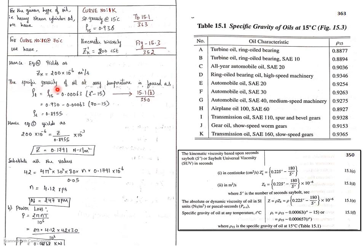The specific gravity of oil at any temperature is found as rho T. This is very important because in the equation we substitute rho T. We know rho 15 — this formula from page 350. Substitute with temperature given as 70 degrees Celsius to get rho T. Once you get rho T, substitute back into the equation with ZK and rho T to find Z. Then substitute all values into the Petroff equation to find N. N will be in RPS — multiply by 60 to get RPM.